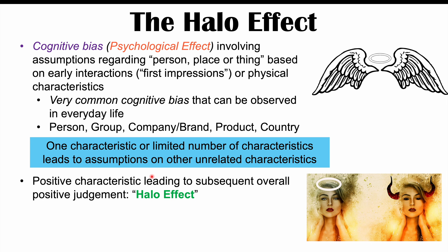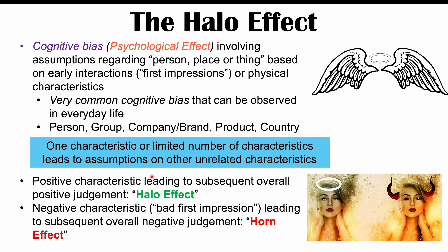The halo effect is more specific to positive characteristics. But if negative characteristics lead to further negative assumptions or an overall negative judgment, we may use the term horn effect. So the halo effect and the horn effect are simply the same phenomenon — one is positive, the other is negative.